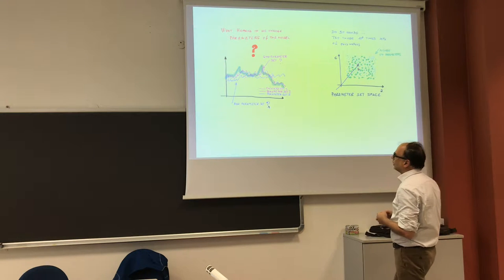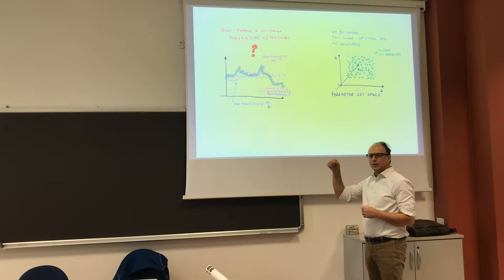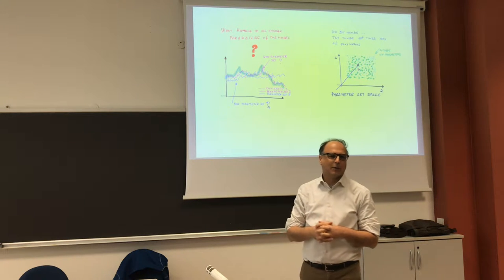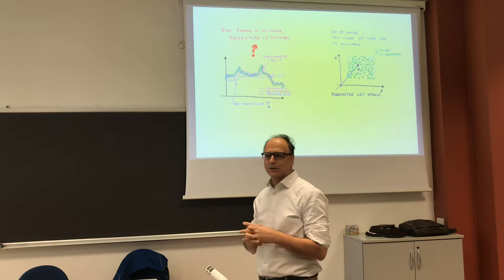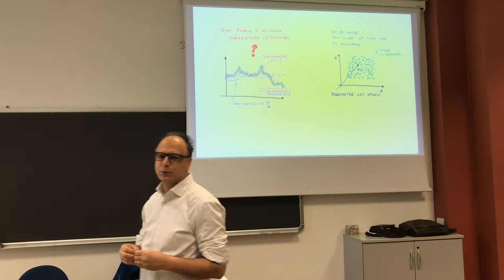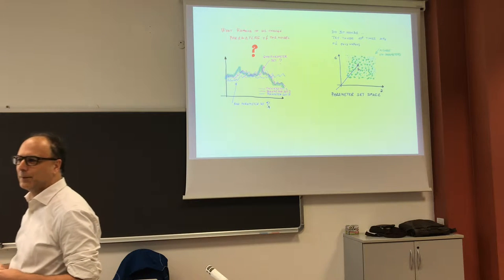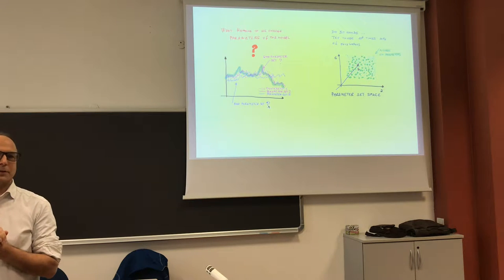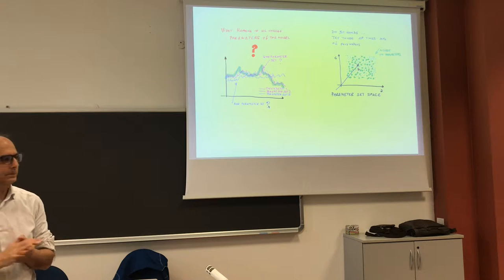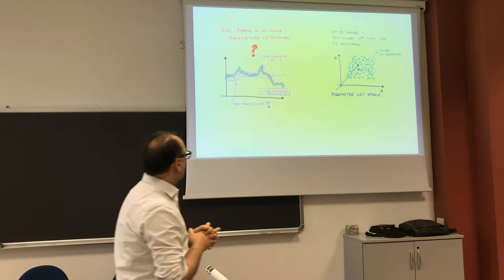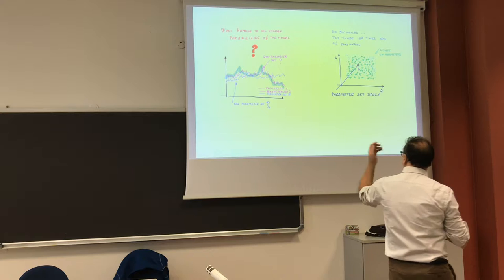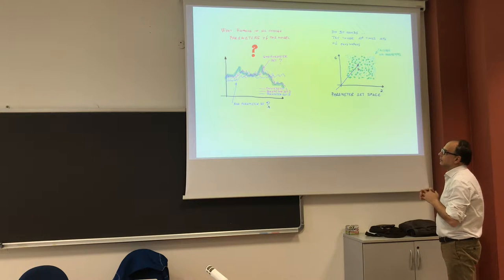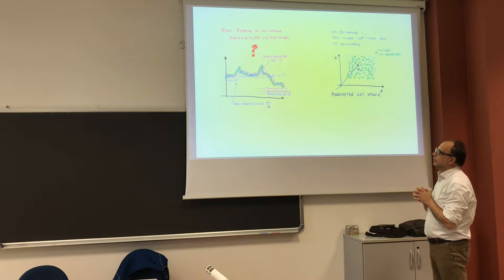Here in the blue, you have the measurements. I put some blurred blue there to see that actually measurements are not like model outputs. Usually there is an error in measurements that can be pretty wide. Then we have one parameter set, two parameter set, three parameter set. Which is the good one?